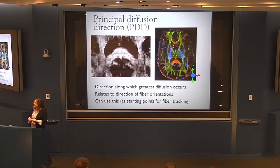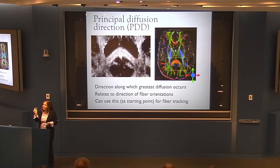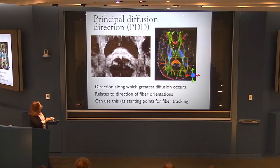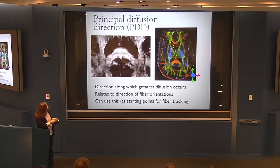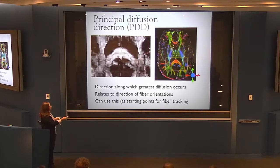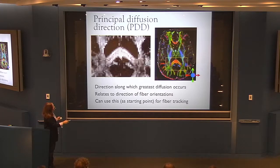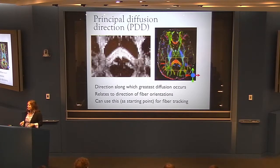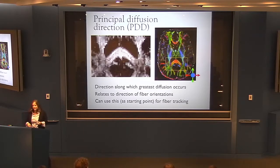The principal diffusion direction can be visualized as a vector in every voxel showing what direction the fibers are running. One approach overlays vectors on an FA map — but it's hard to read unless zoomed in. A more popular approach uses a color map: red encodes right-left, green encodes anterior-posterior, and blue encodes superior-inferior. It takes a while to get used to, but once adapted you can see a lot of structural information.